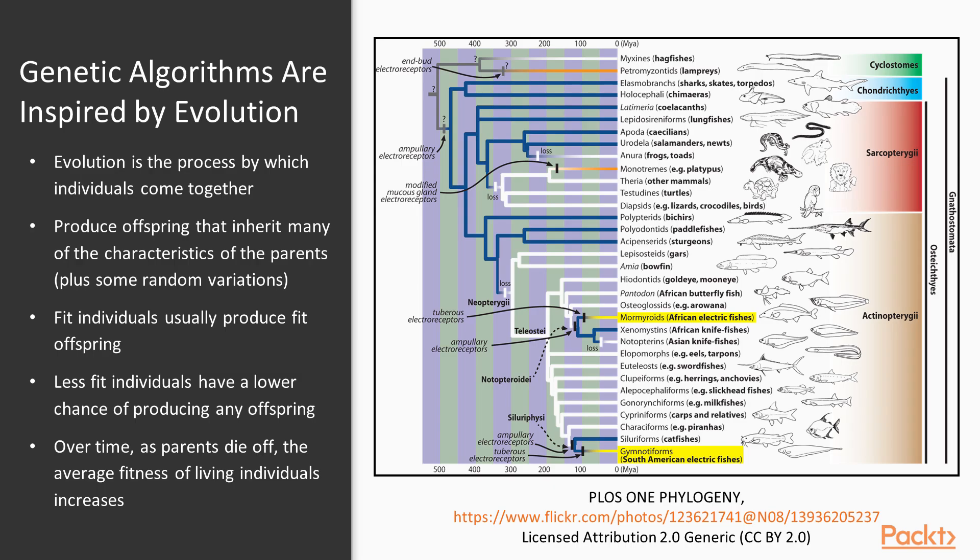Genetic algorithms are inspired by evolution. At a high level, evolution is the process by which individuals come together and produce offspring. These individuals inherit many of the characteristics of the parents, but also have some random variations. Fit individuals who become parents generally produce fit offspring. Less fit individuals have a lower chance of becoming parents in the first place.